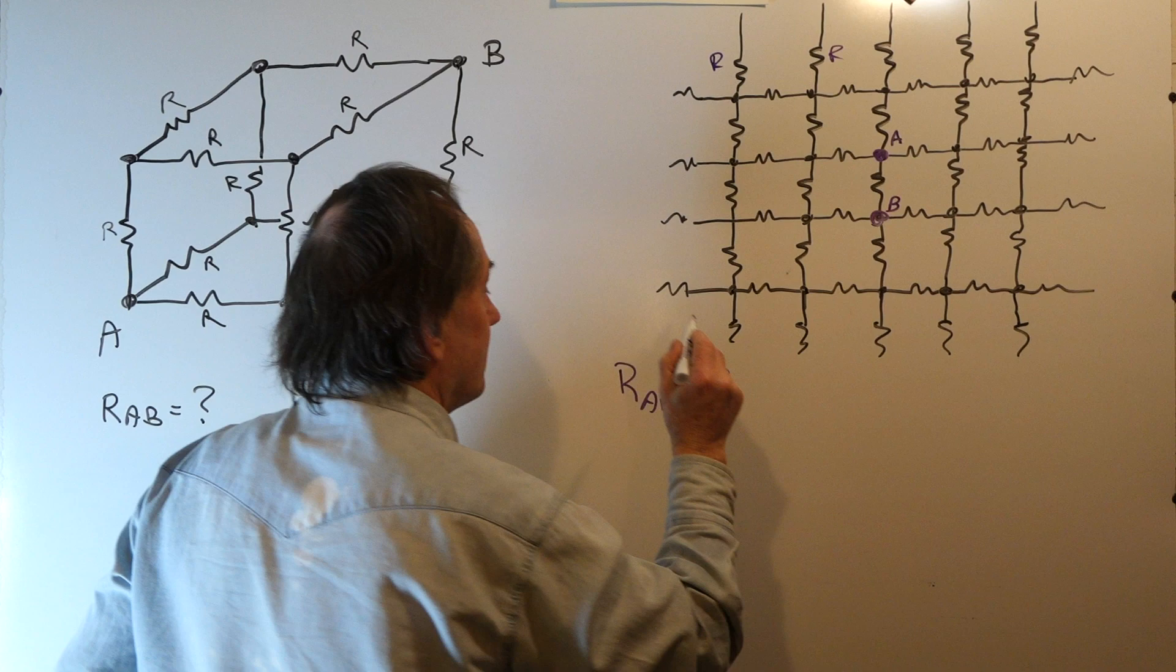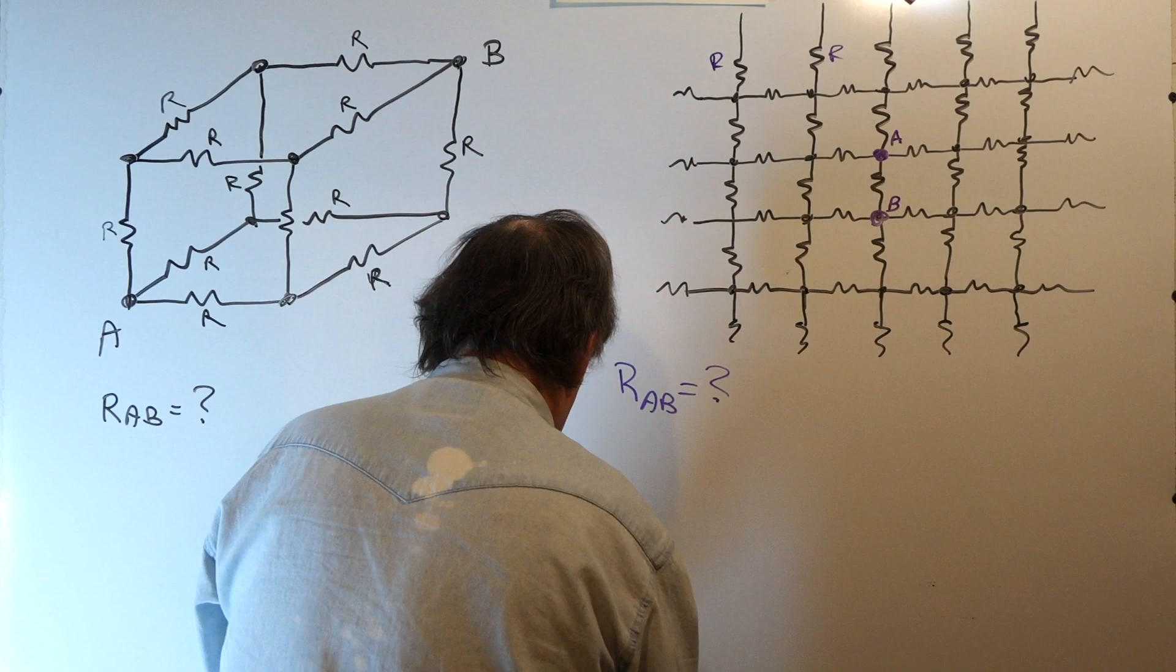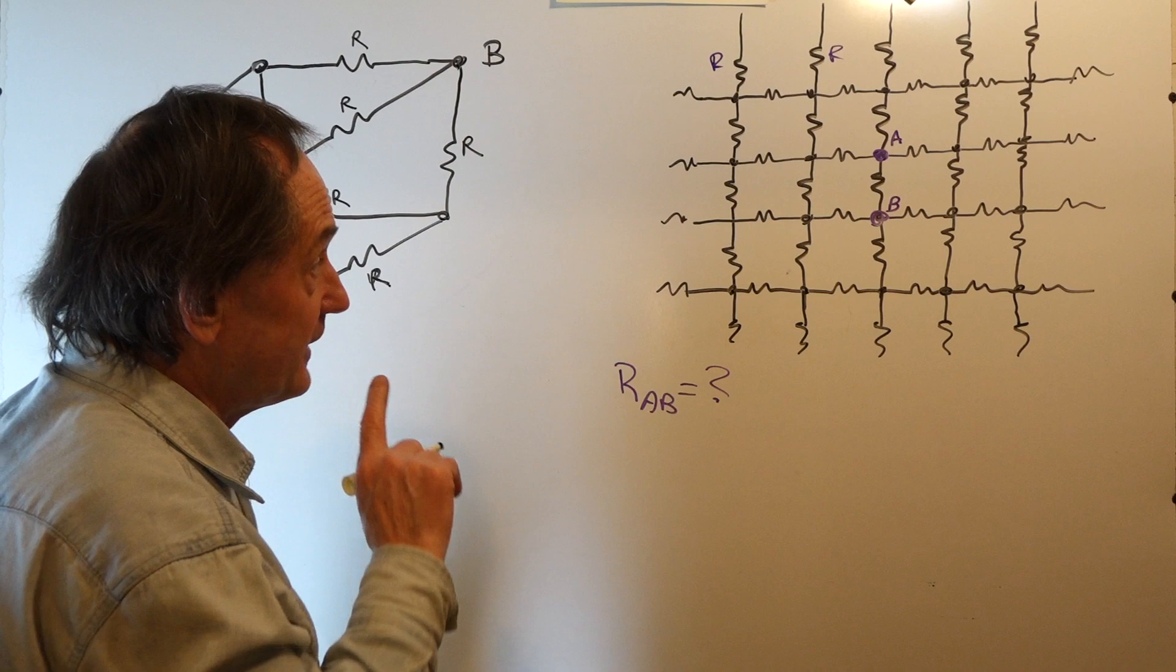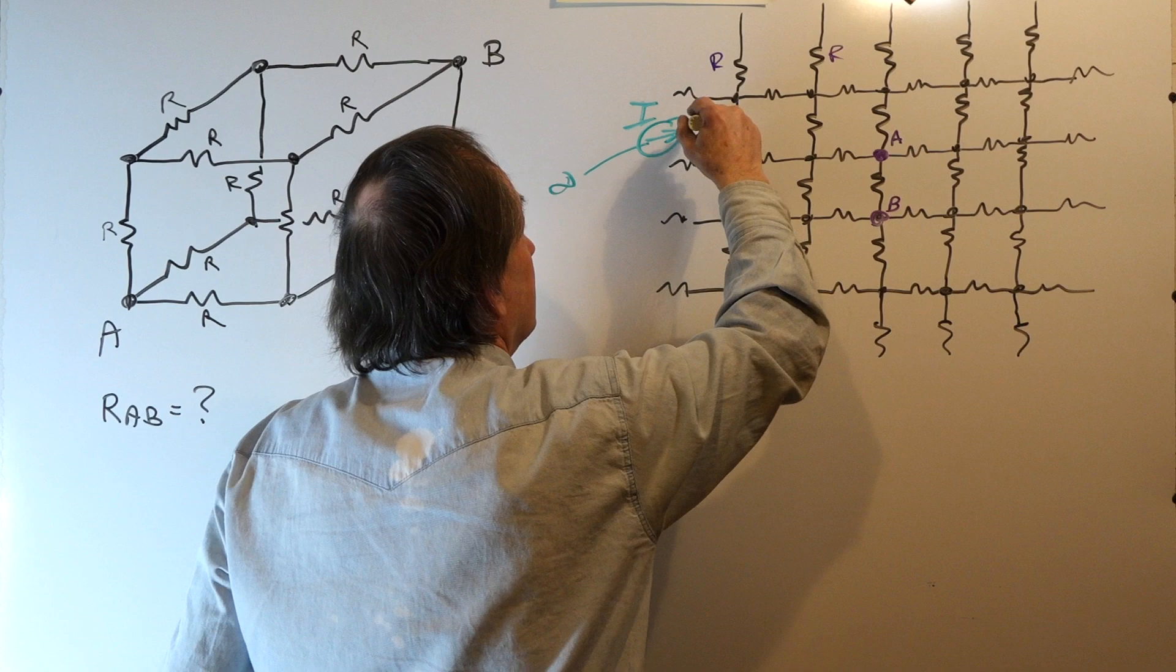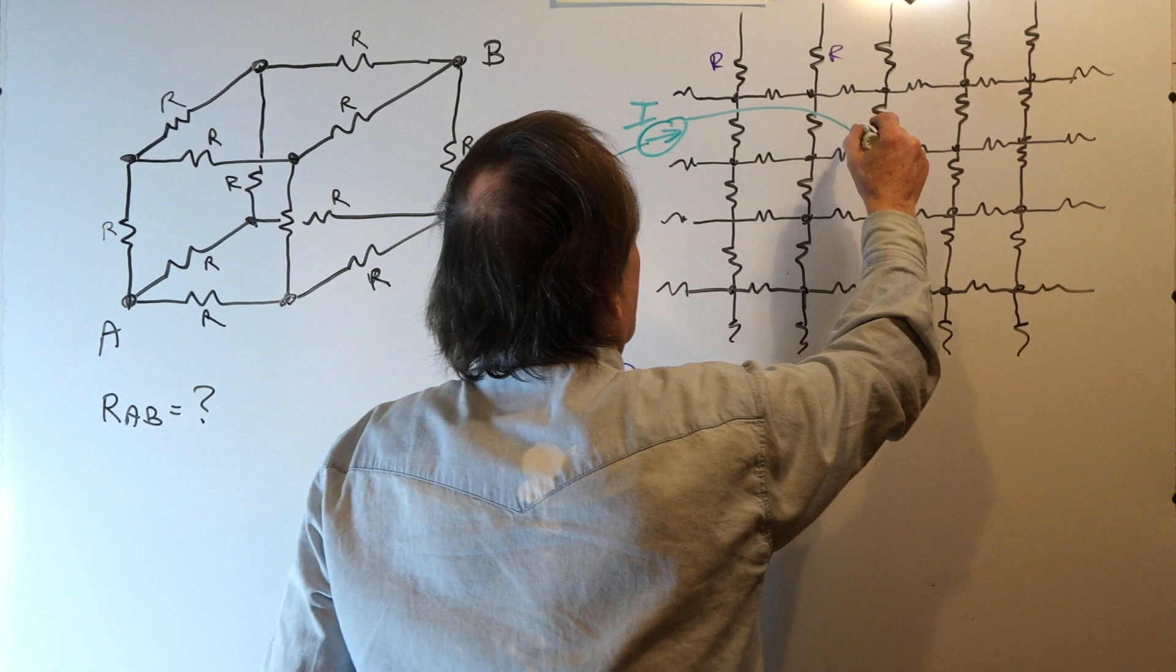Well, the most direct way to solve this is using superposition. What I'm going to do is connect a current source from infinity, out here at infinity. I'm going to direct a current I into the network at A. And this current is going to flow.